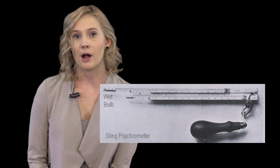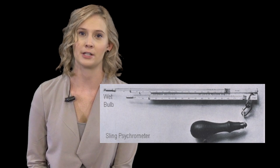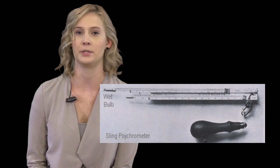A sling psychrometer measures relative humidity by measuring two different temperatures: the actual air temperature and something called the wet bulb temperature.